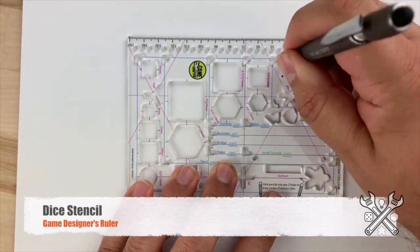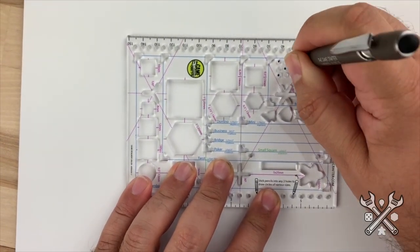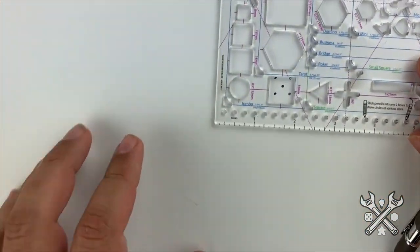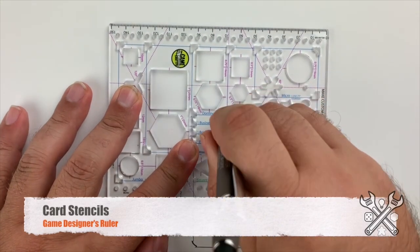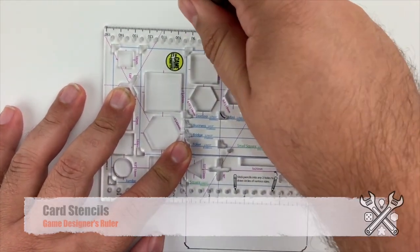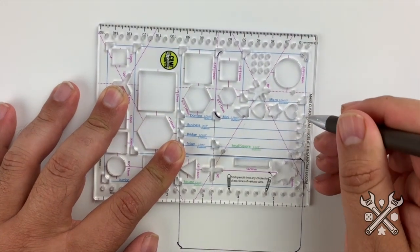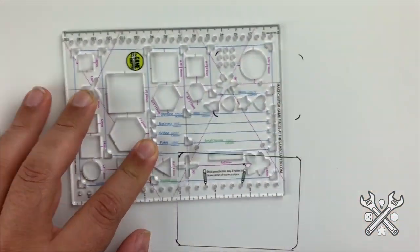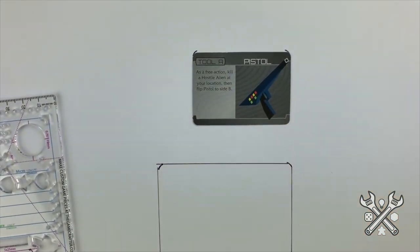It has a dice stencil so that you can easily draw dice placements on boards and cards. The card stencils range from micro to jumbo. You can use them to draw card placements or even measure cards of an unknown size. It has round and square corner placements so that you can draw cards in the style that you like.